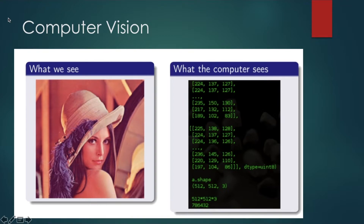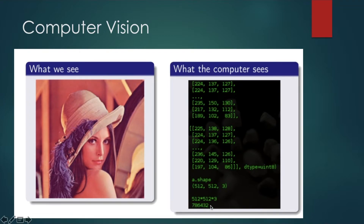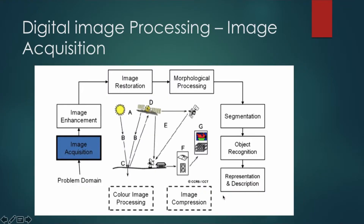The image type is unsigned integer 8, so it's an 8-bit image, and the numbers in this digital image represent intensity. For example, values like 255, 138, and 128 represent R, G, and B respectively. Intensity values range from 0 to 255 for an 8-bit image. We will study this further in detail in the next tutorial. The shape consists of three channels because it's an RGB image, and if you multiply all the figures you get the storage size in bytes.